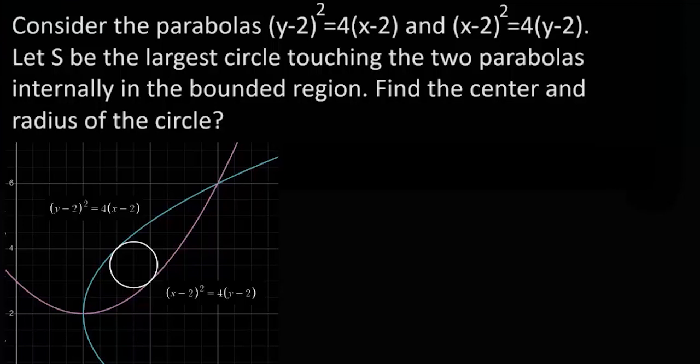Now the question was consider the parabolas (y-2)² = 4(x-2) and (x-2)² = 4(y-2) and let S be the largest circle touching the two parabolas internally in the bounded region. Find the center and radius of the circle.